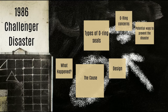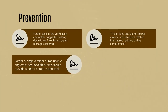So how could the disaster have been prevented? Further testing: the verification committee suggested testing down to 40 degrees Fahrenheit, which program managers ignored. If testing at 40 degrees had revealed issues, there would definitely have had to be a redesign. A thicker tang and clevis: thicker material would reduce the rotation that caused O-ring decompression. The rotation was caused by the tang and clevis bending, and making them thicker would address that. Yes, weight would be added, but the weight would be immaterial compared to safety.